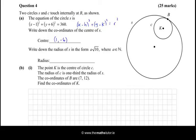Write down the radius of S in the form a√10. We need to get the square root of 360, which would be the square root of 36 times the square root of 10, and that would be 6√10.